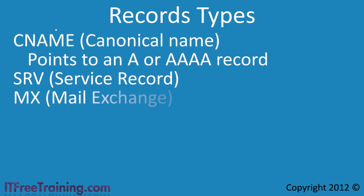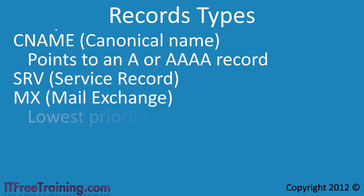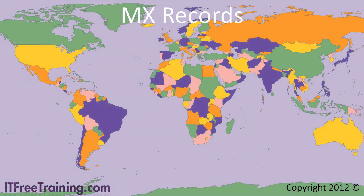Lastly, you have the mail exchange or MX records. When you attempt to send an email, the email server will read the MX records for that domain. Each MX record has a priority — the lower priority MX records are tried first. If the email server cannot contact the server with the lowest MX priority, it will try the next one.